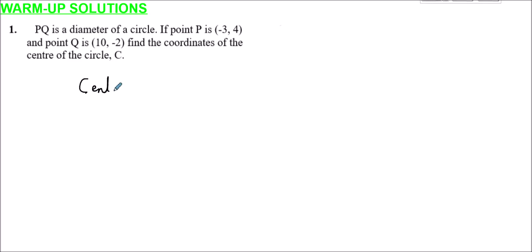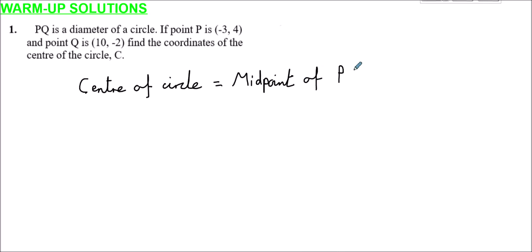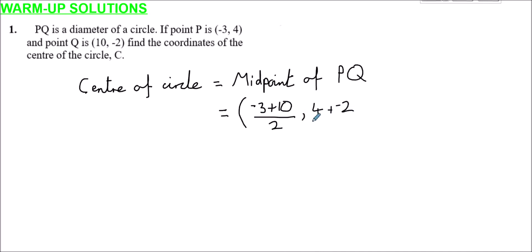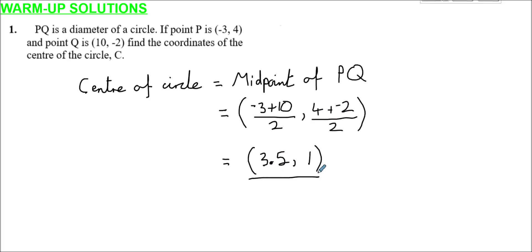The center of the circle is the same as the midpoint of PQ. We work out the midpoint by averaging the x-coordinates of P and Q: (-3 + 10) / 2 = 7/2 = 3.5, and the y-coordinates: (4 + (-2)) / 2 = 2/2 = 1. So the coordinates of the center are (3.5, 1).